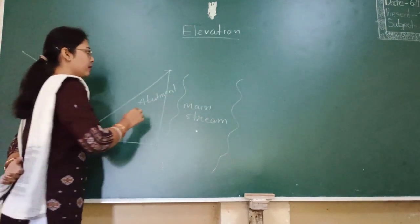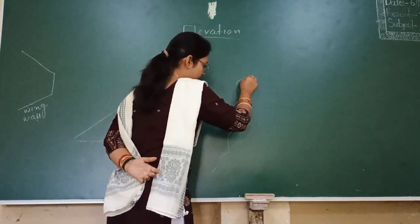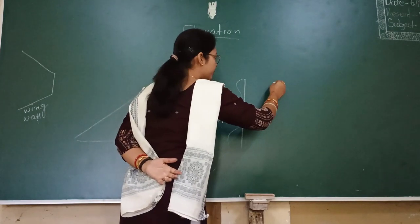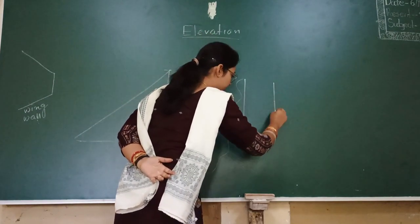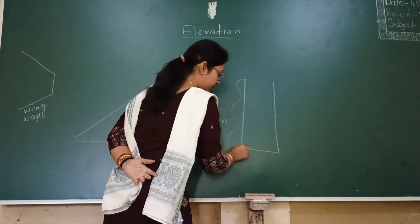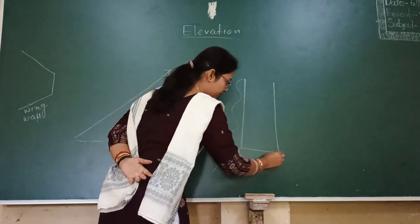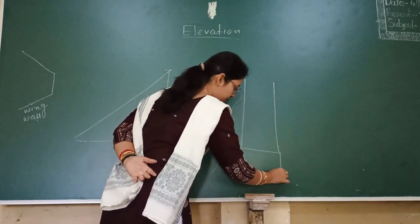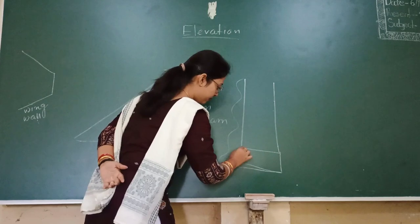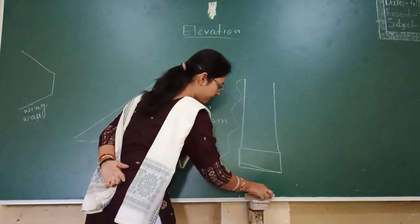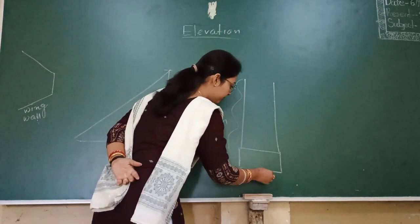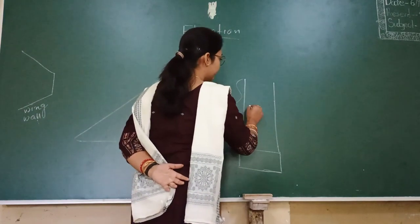It retains the soil and prohibits the downward passage of the soil. Then we will see this kind of structure — the pier structure, what we call as piers.